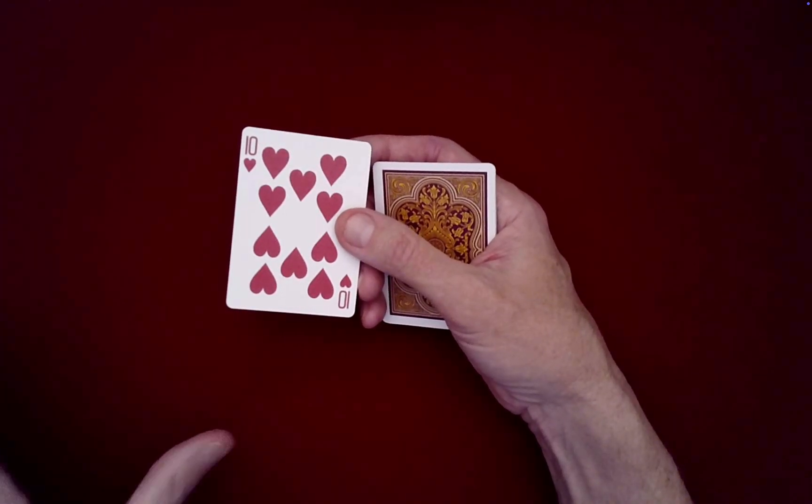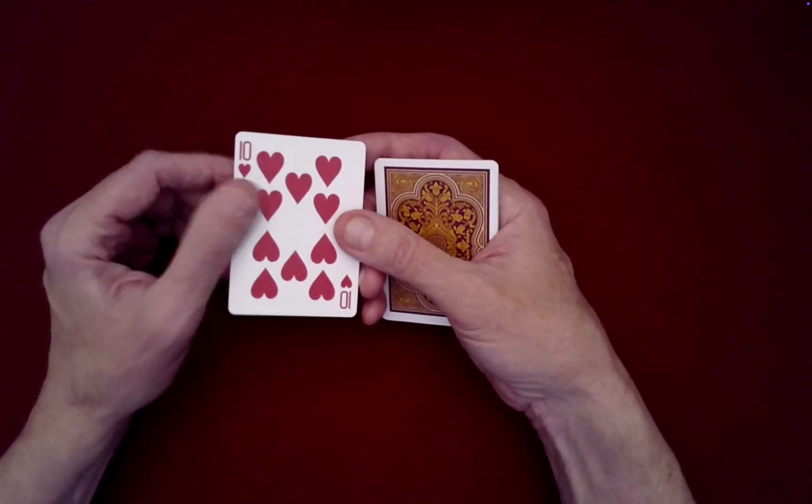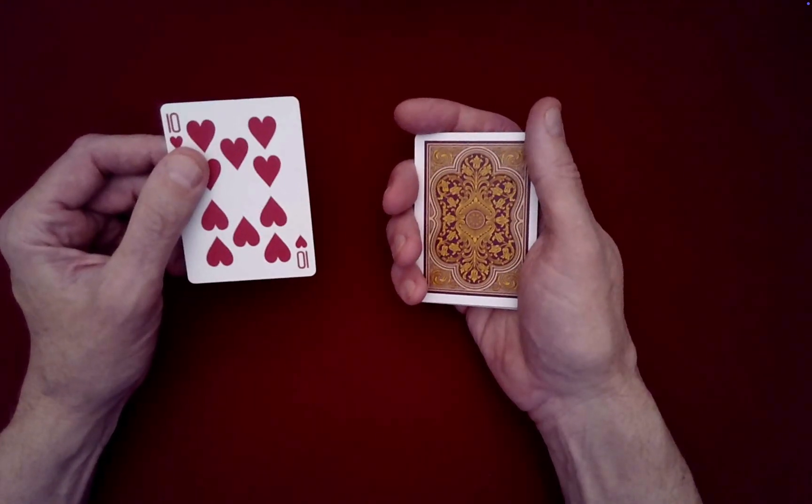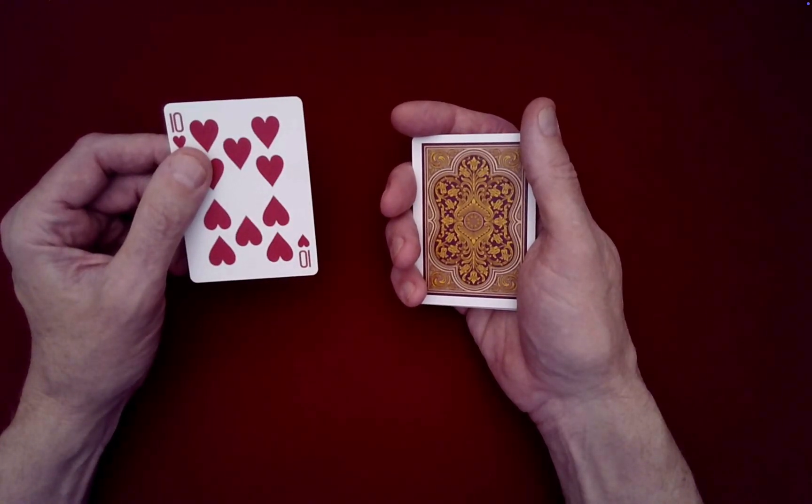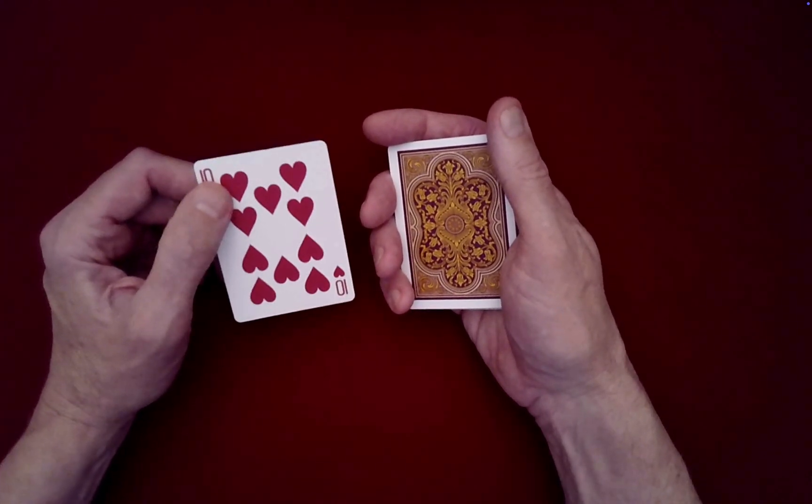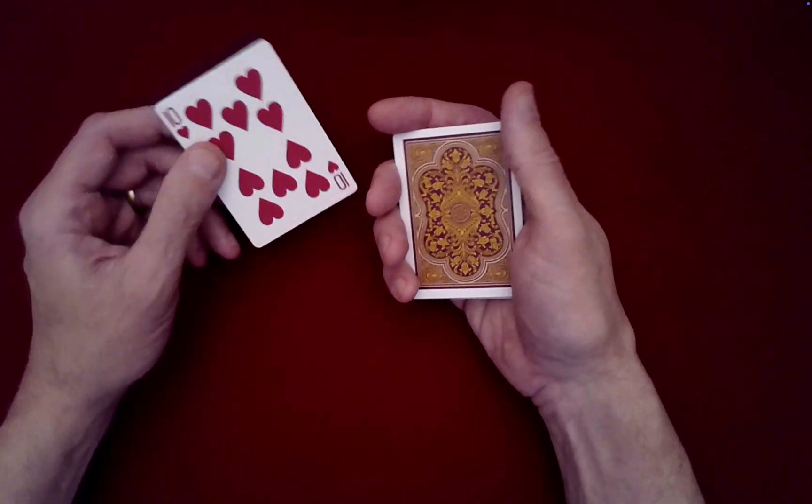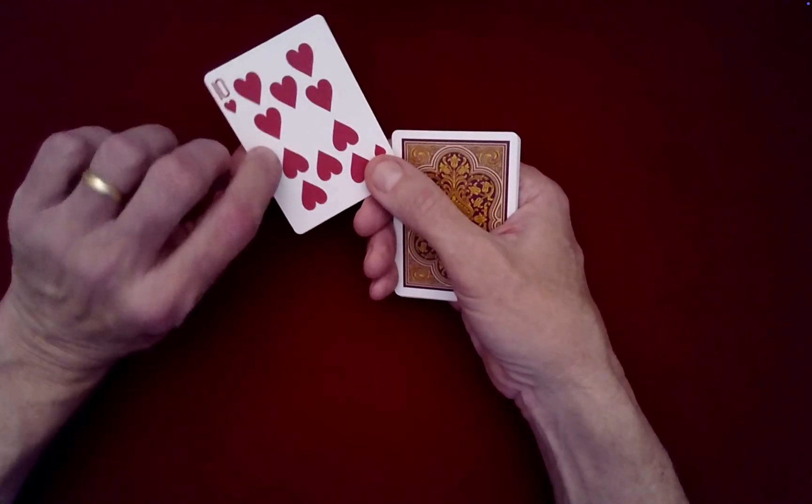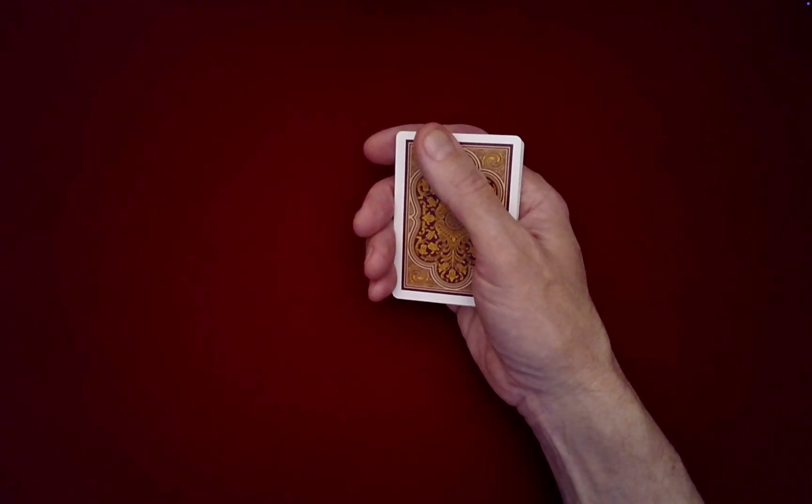When you put them in order, ace through nine, and you still have a card in your hand, they're going to go, why do you still have a card? And then you show that it's the 10 of hearts and watch their head explode. So anyway, pretend this is behind my back where I can grab it.